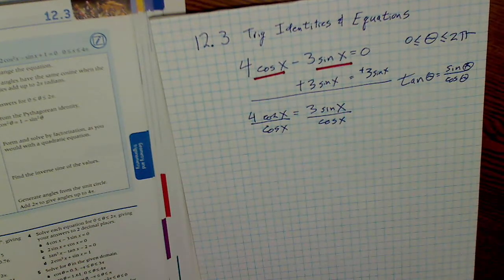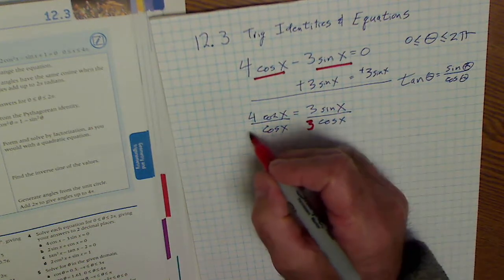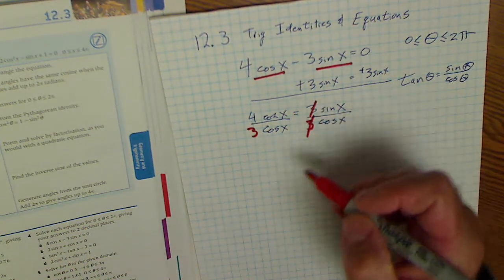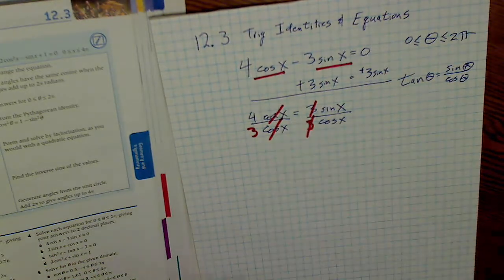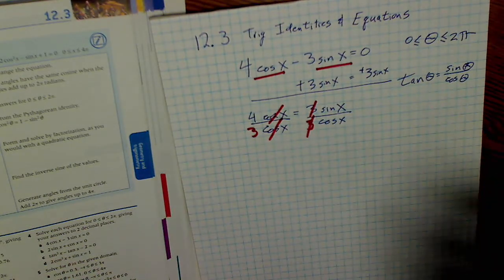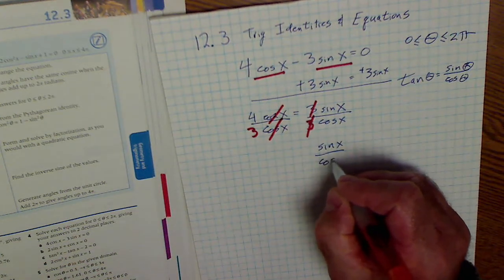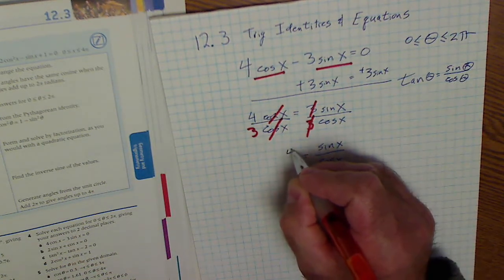So my 3's will cancel on this side. My cosines will cancel on that side. And it'll leave me with sine of x over cosine of x is equal to 4 thirds.